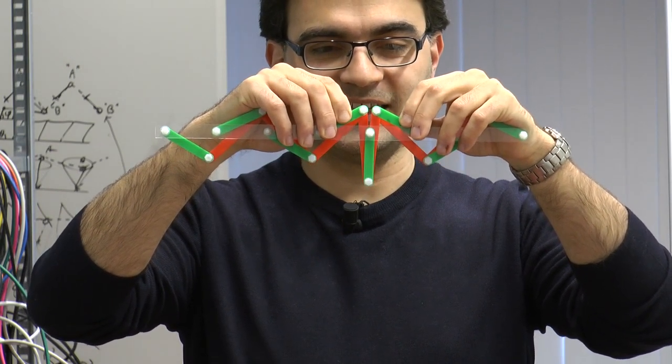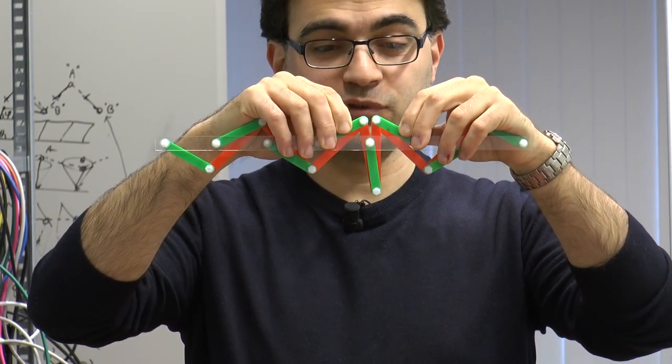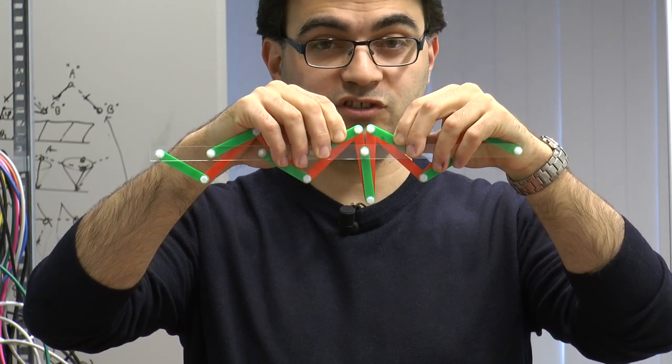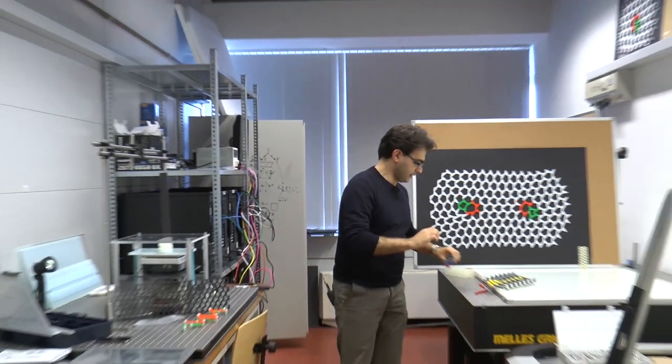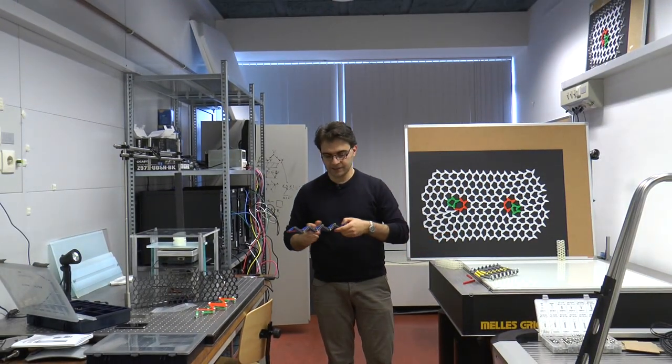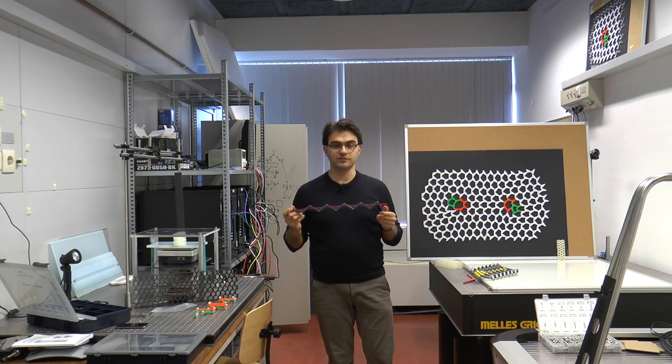If I try to make an anti-kink, I put stress in the structure, and that cannot happen because I have rigid bars. There is, however, one way out.